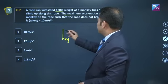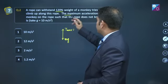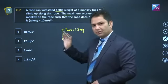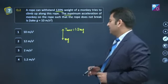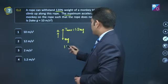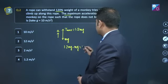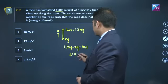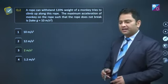For maximum acceleration, the tension will be T max which is 120 percent, meaning 1.2 mg. If tension becomes more than this, clearly the rope will break. So the monkey doesn't want that. In that given case, the maximum acceleration will be in this direction: 1.2 mg minus mg equals m times a. This is maximum acceleration which is 0.2g. g value is 10, multiply it, you get 2 meter per second square, option number 3.